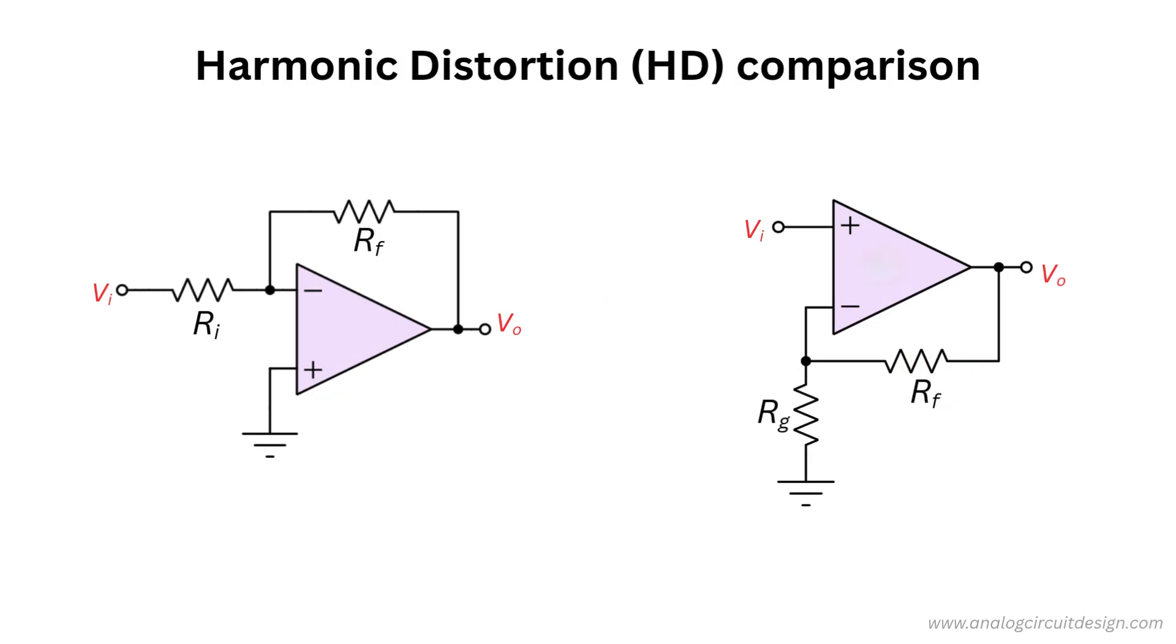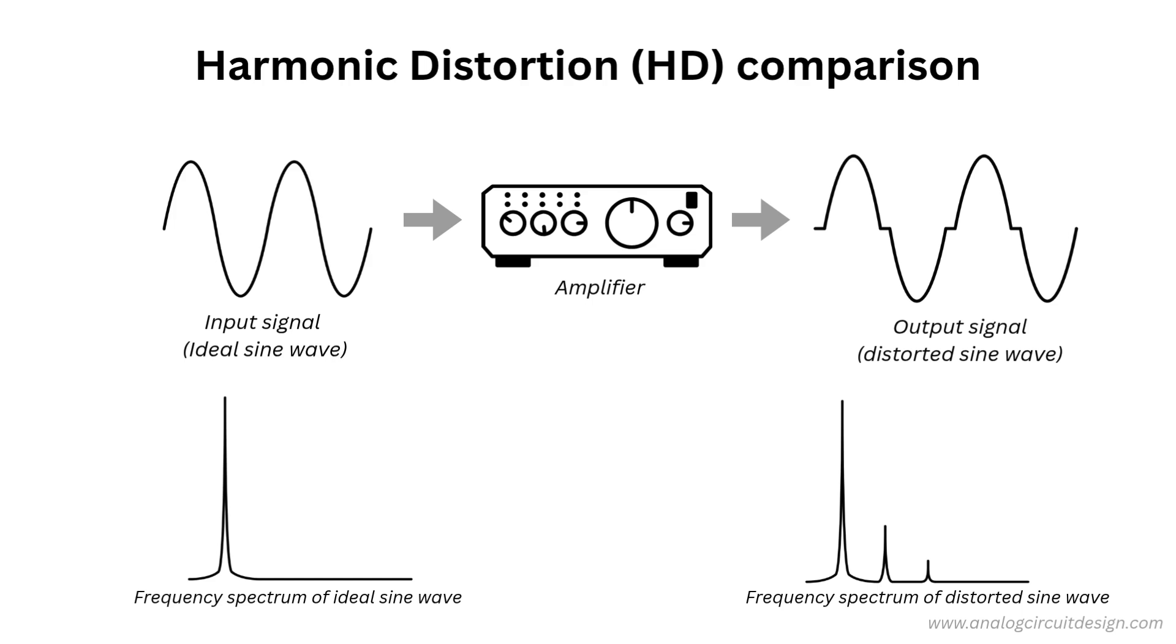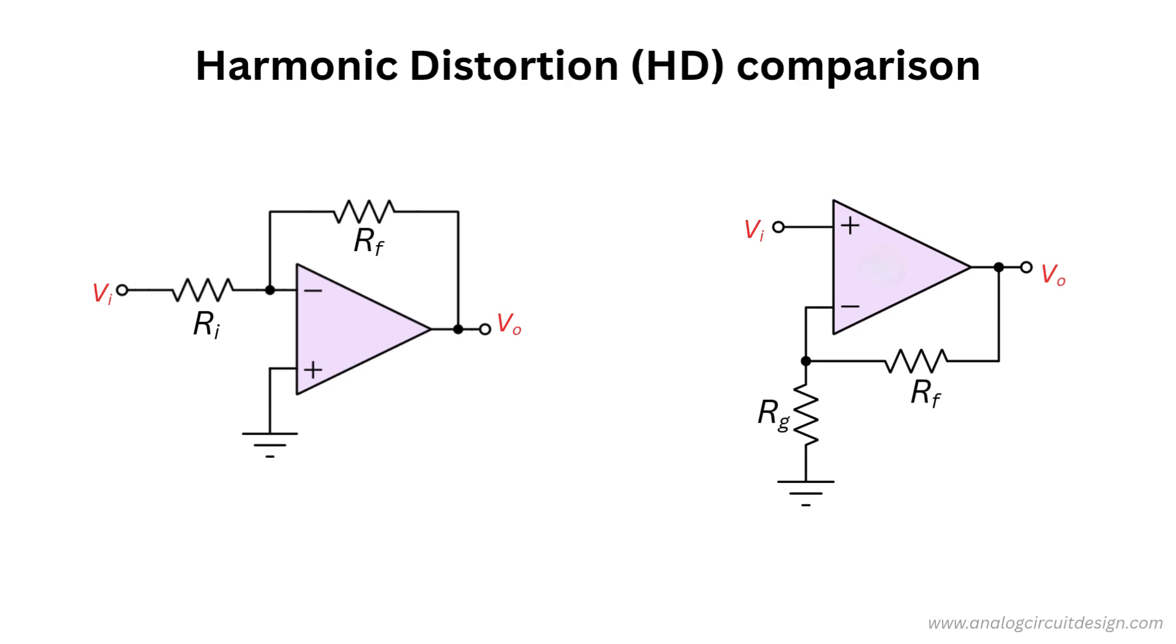Let's compare the harmonic distortion in both configurations. It happens when transistor non-linearity adds unwanted harmonic frequencies. Ideally, harmonic distortion should be zero. And the lower it is, the better. A good rule of thumb? Keep the voltage swing across transistors small to minimize distortion. There's an important difference between the two topologies. Even though both produce the same output magnitude, their input behavior is quite different.